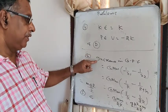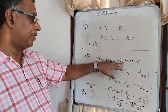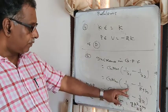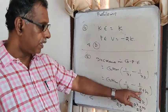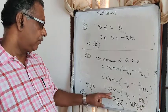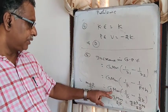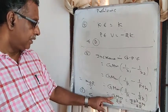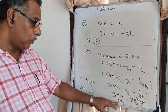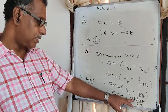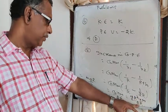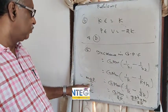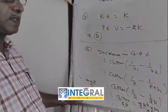Question 5: Increase in gravitational potential energy = G·M·m·(1/R₁ − 1/R₂). With R₁ = R and R₂ = 2R (since H = R), this gives G·M·m·(1/R − 1/2R) = G·M·m / 2R. Since G·M = g·R², this equals m·g·R / 2. The answer is C.